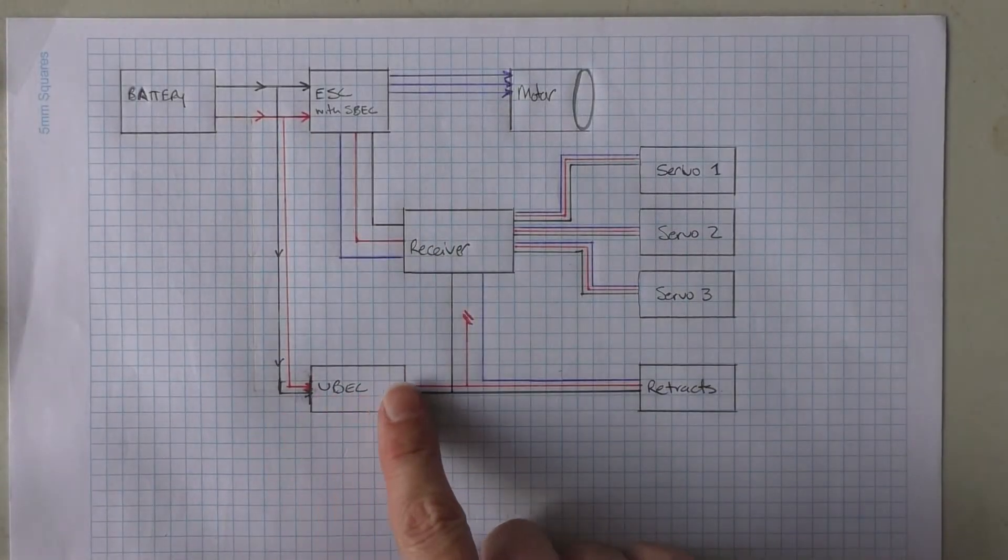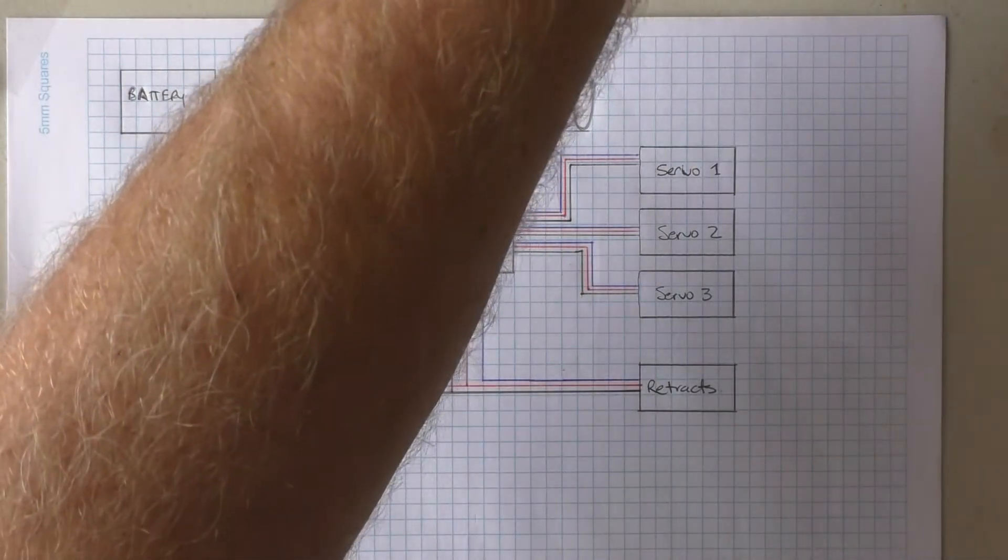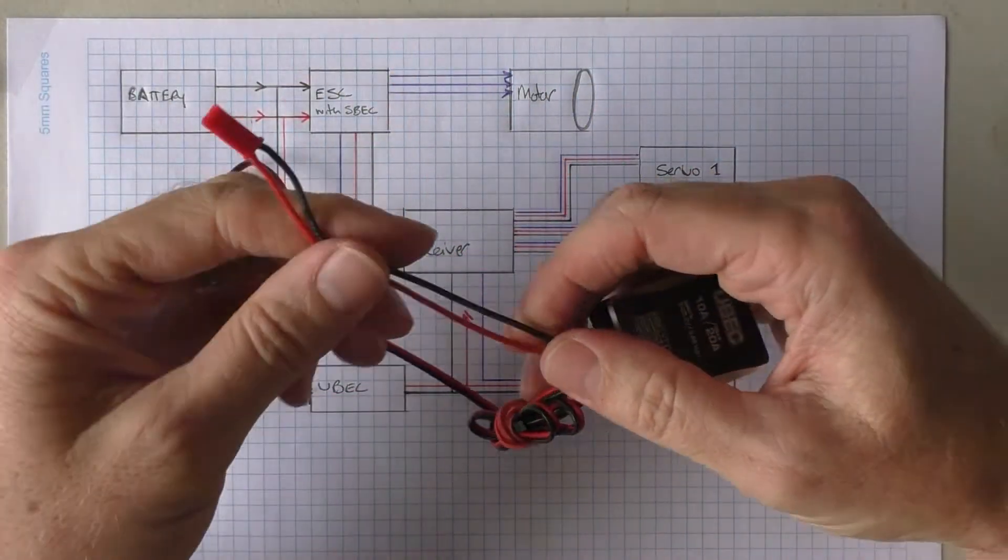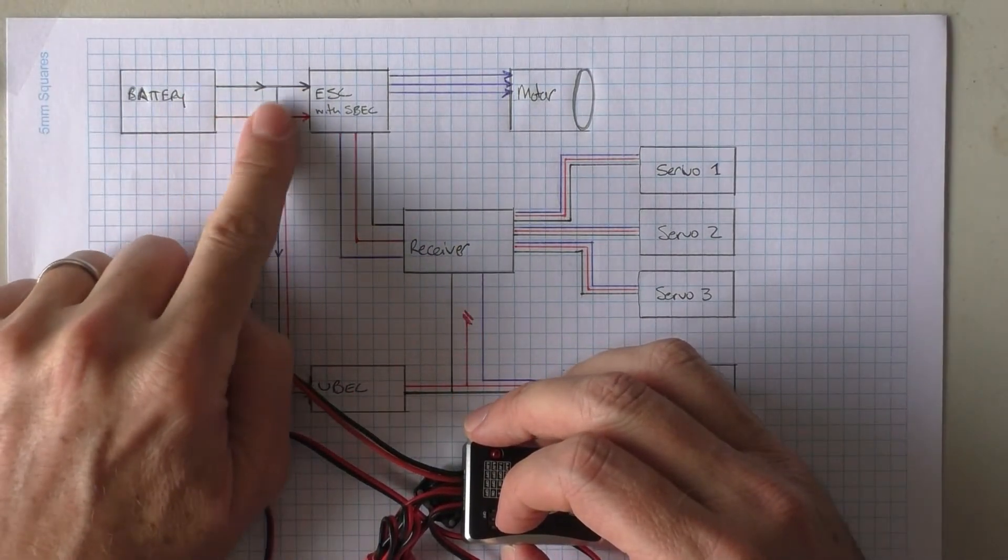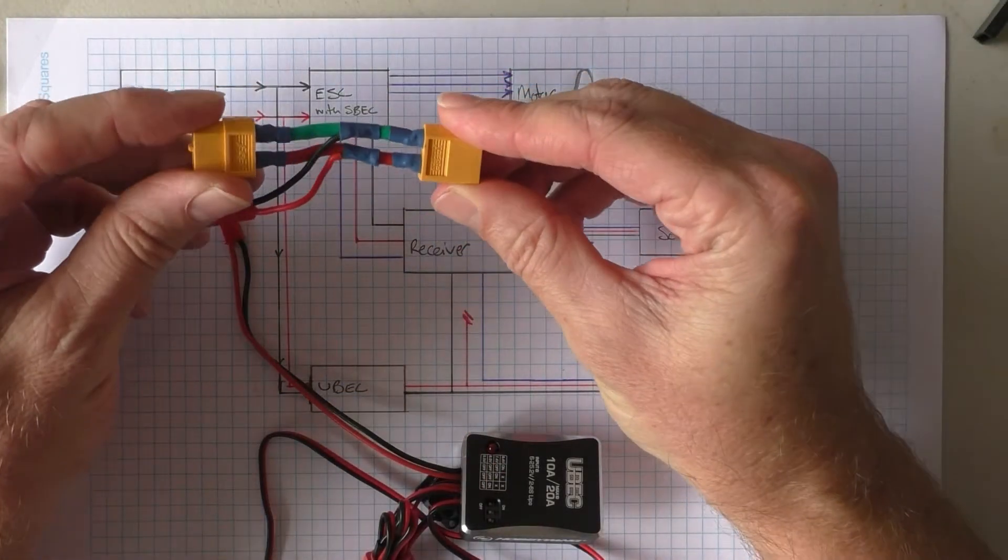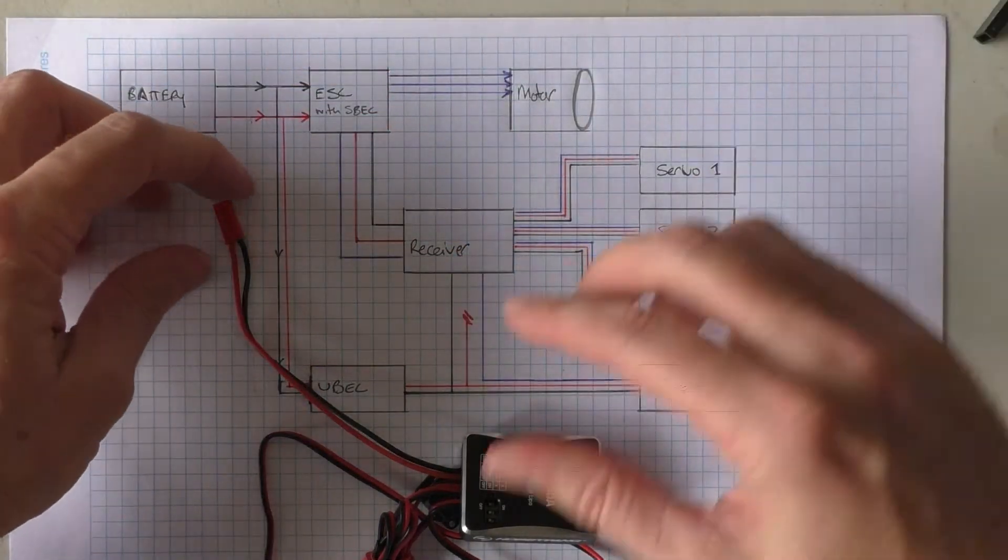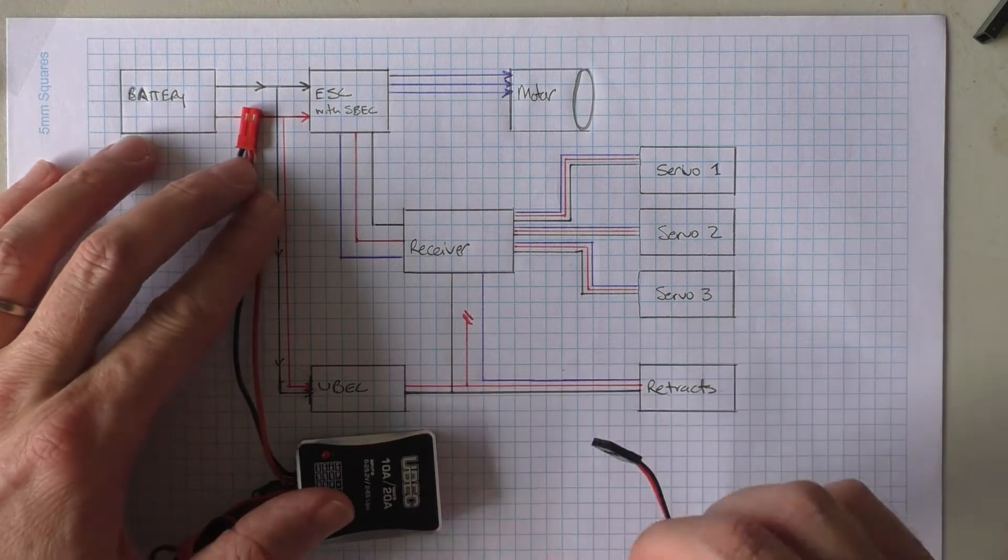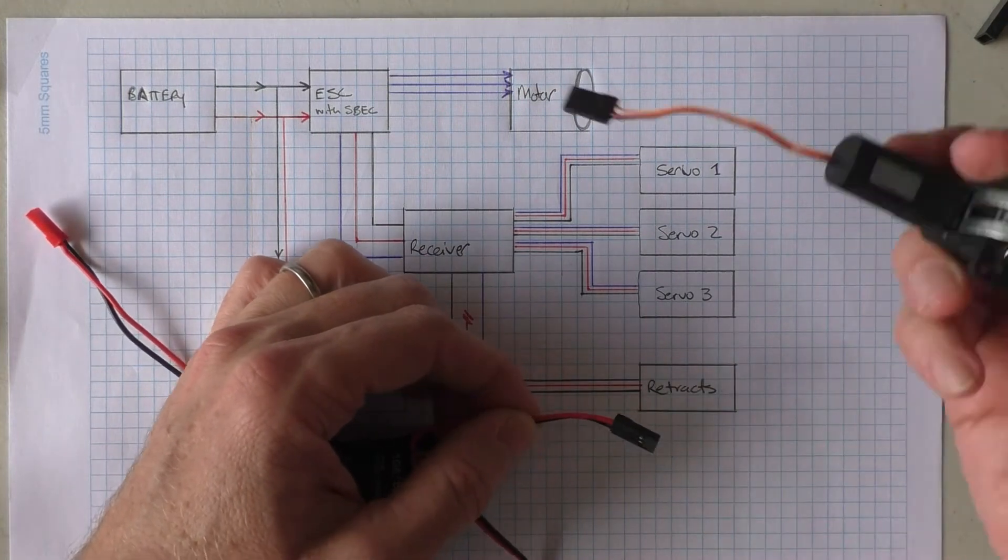So now we've put the UBEC into play. So essentially, the UBEC picks up the power, so you need to tap into the power here coming from the battery to the ESC. Now, you can do it like this. You can just do it with the battery connector and have this feeding off the power supply. There's a number of different ways you can do it. So essentially, you're pulling power from the battery supply down to here, and then this power is going to power the retract.